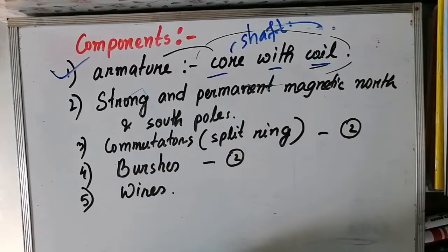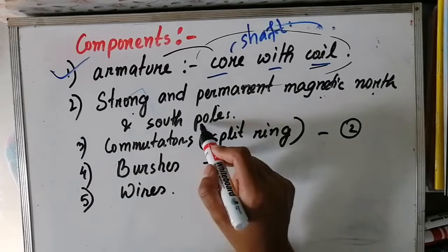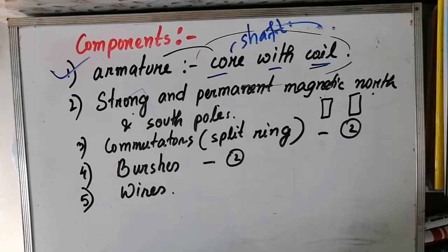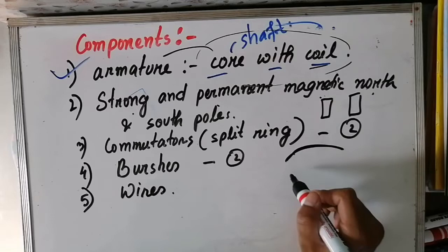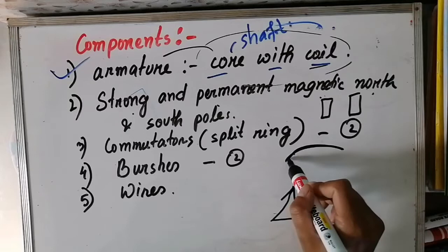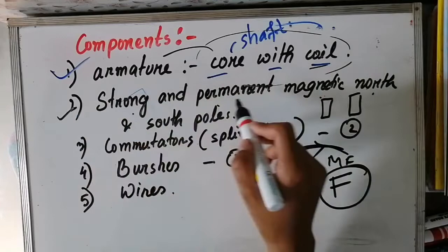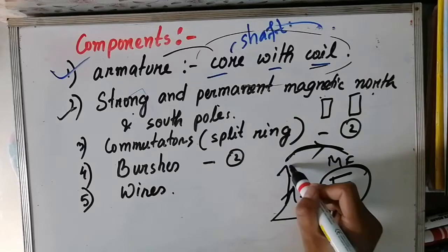The next component is the strong and permanent magnetic north and south poles. There is a magnetic field between the poles. The magnetic field is used with the battery.